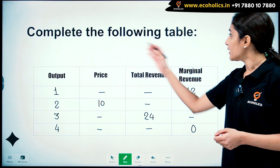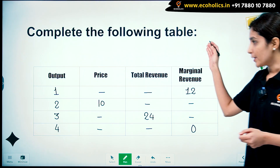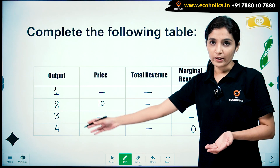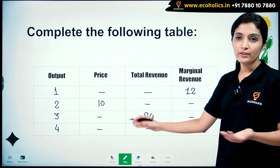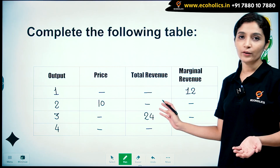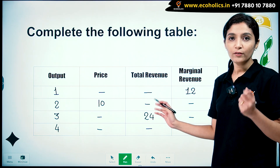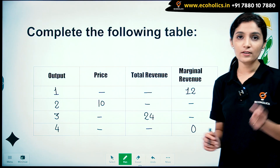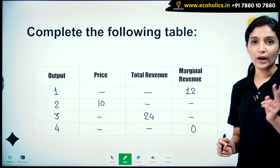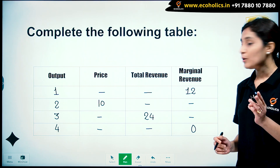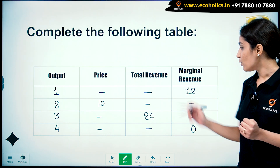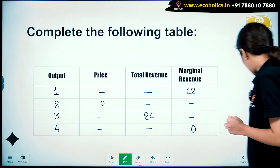Complete the following table. Our output is given and there are a few entries which are missing. We are going to solve this using the concepts of total revenue, average revenue and marginal revenue.